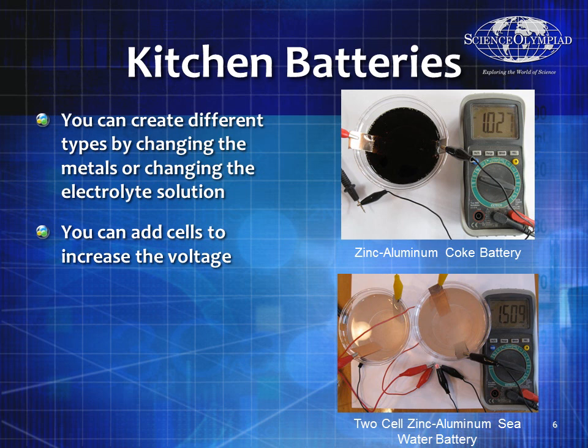Other electrolytes you can use include seawater — which has excess ions available in solution — lemon juice, or just about anything that is acidic. Any time you change the type of metals, it will change the voltage. Here's another Coke battery where zinc and aluminum, which have a bigger difference, gives a bigger voltage of 1.027 volts.